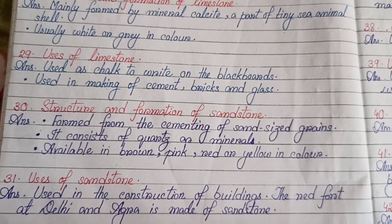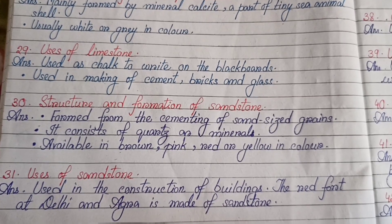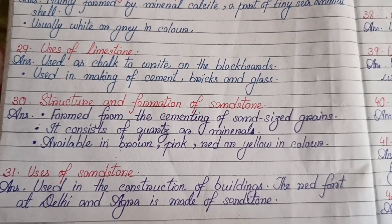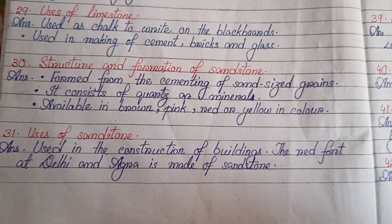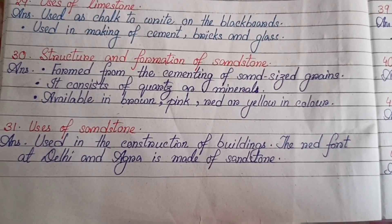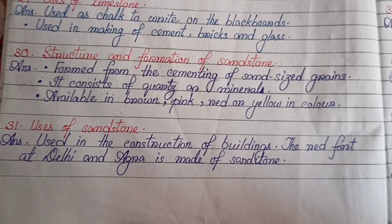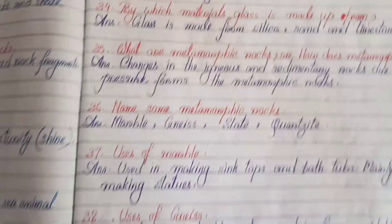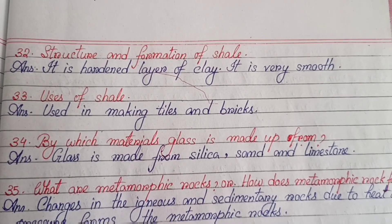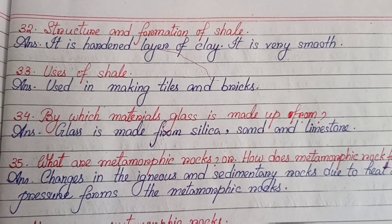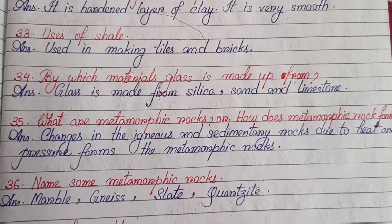Structure and formation of sandstone: formed from the cementing of sand-sized grains; consists of quartz as mineral; available in brown, pink, red or yellow in color. Uses of sandstone: used in the construction of buildings — the Red Fort at Delhi and Agra is made of sandstone. Structure and formation of shale: it is a hardened layer of clay; it is very smooth. Uses of shale: used in making tiles and bricks.